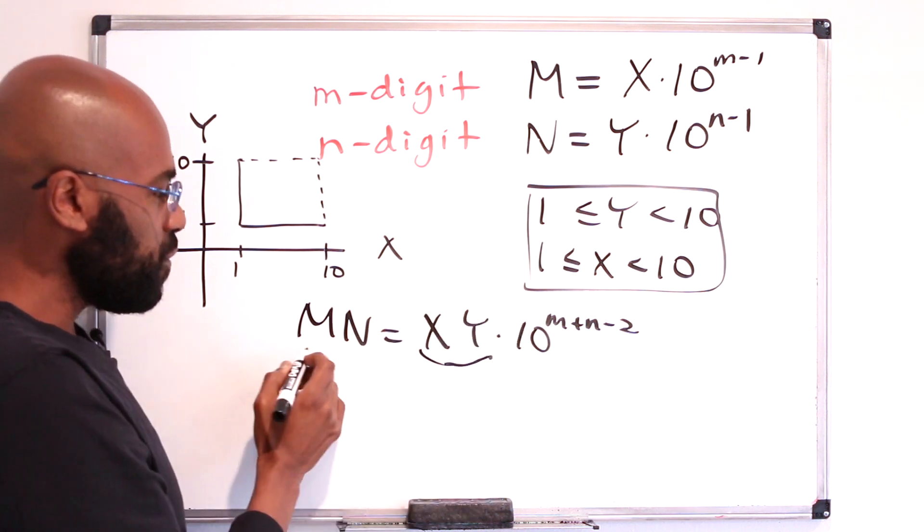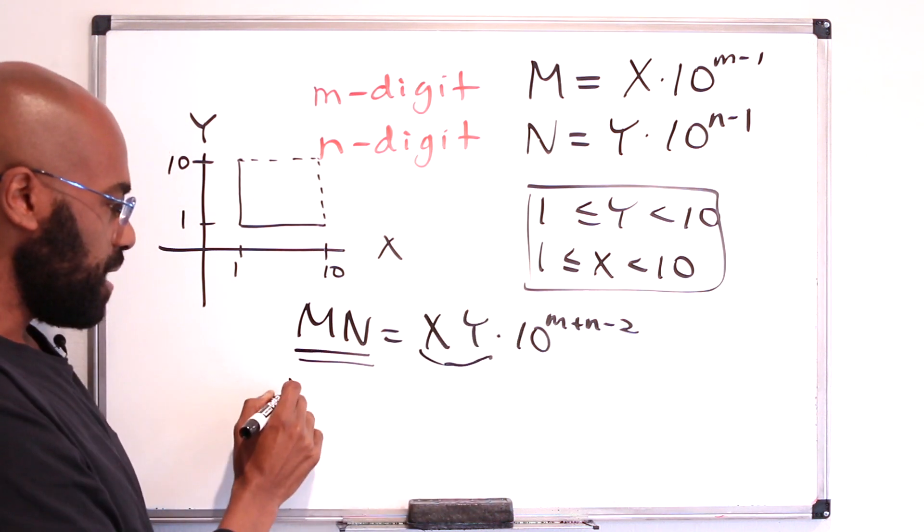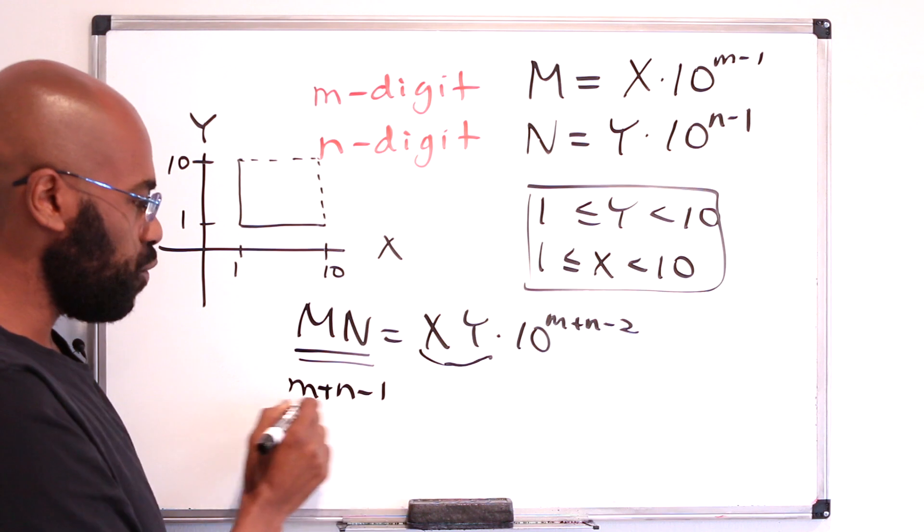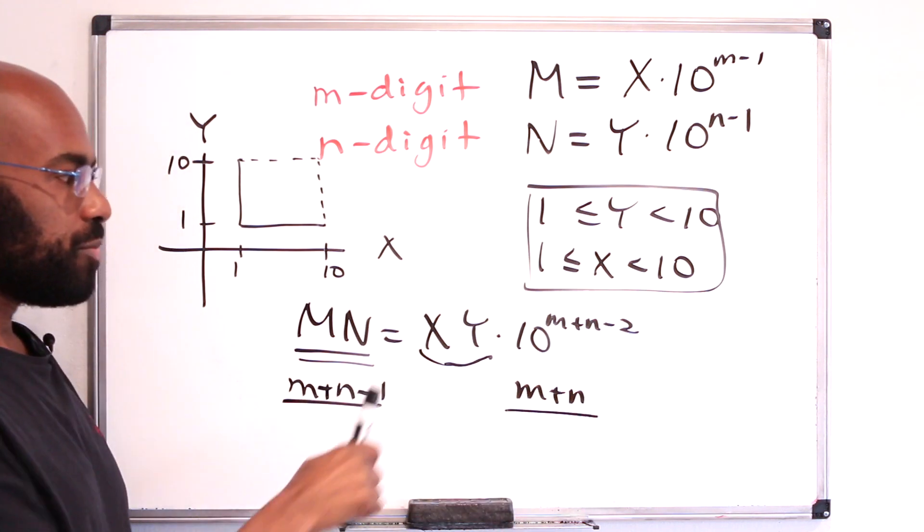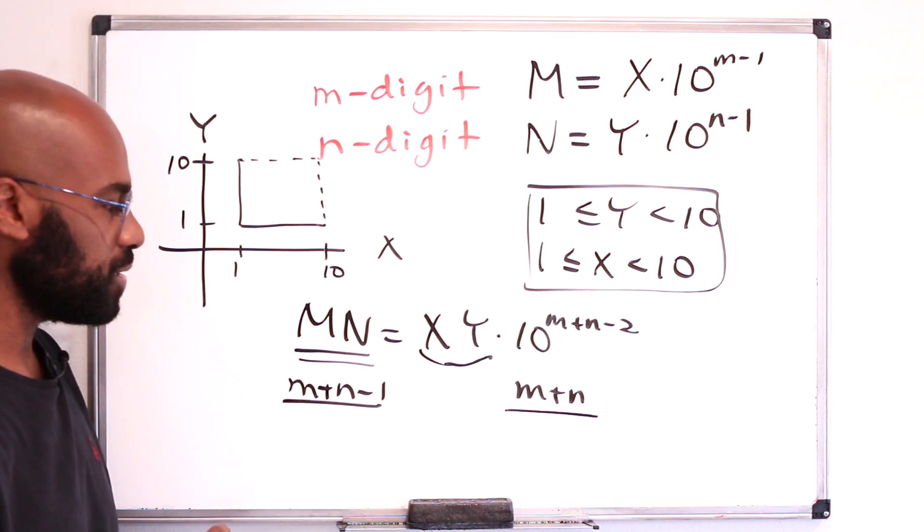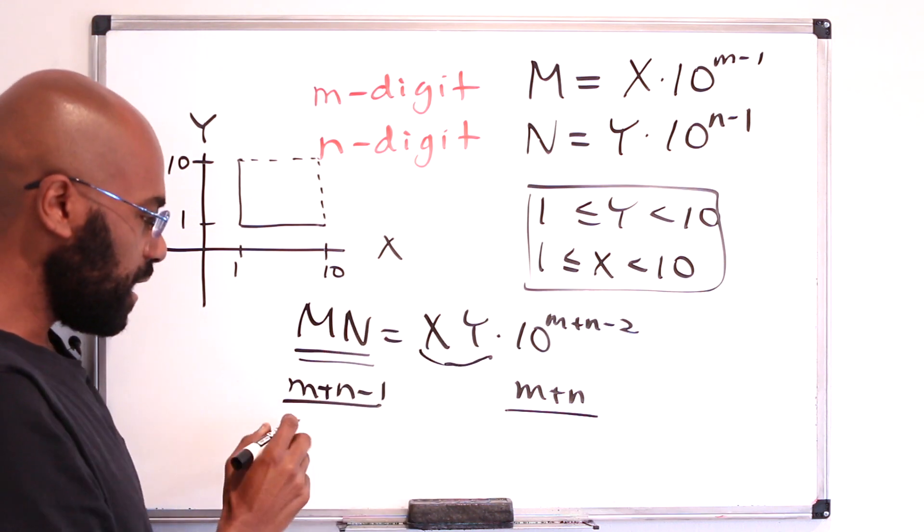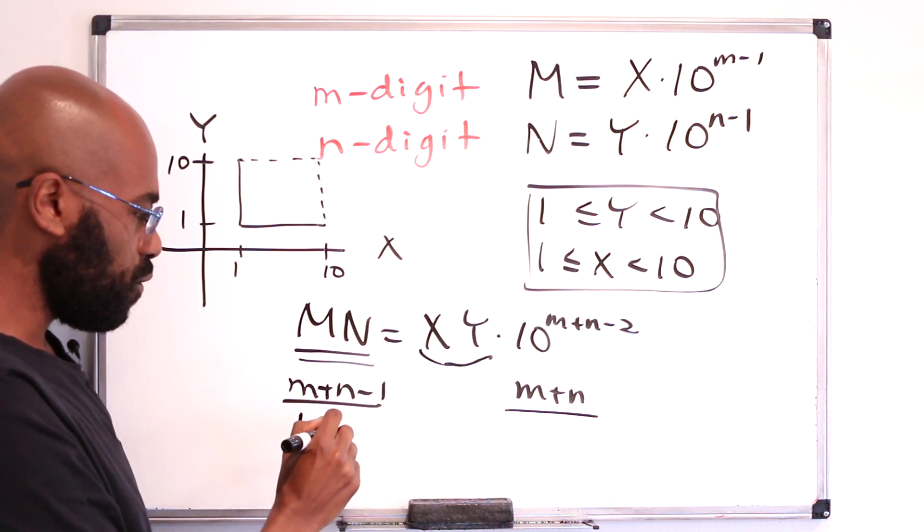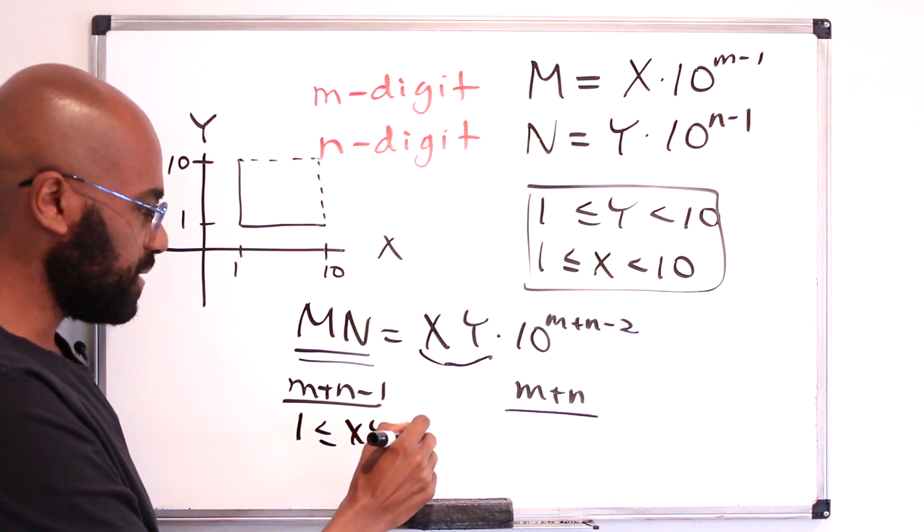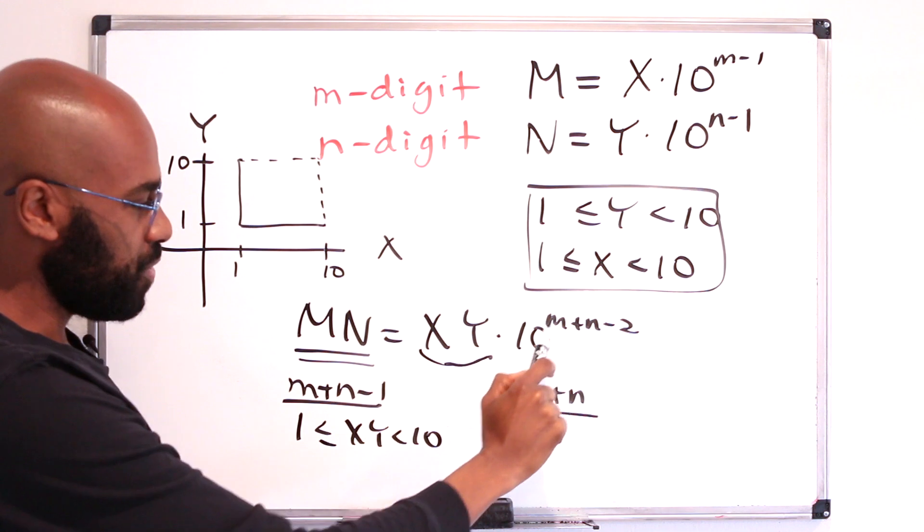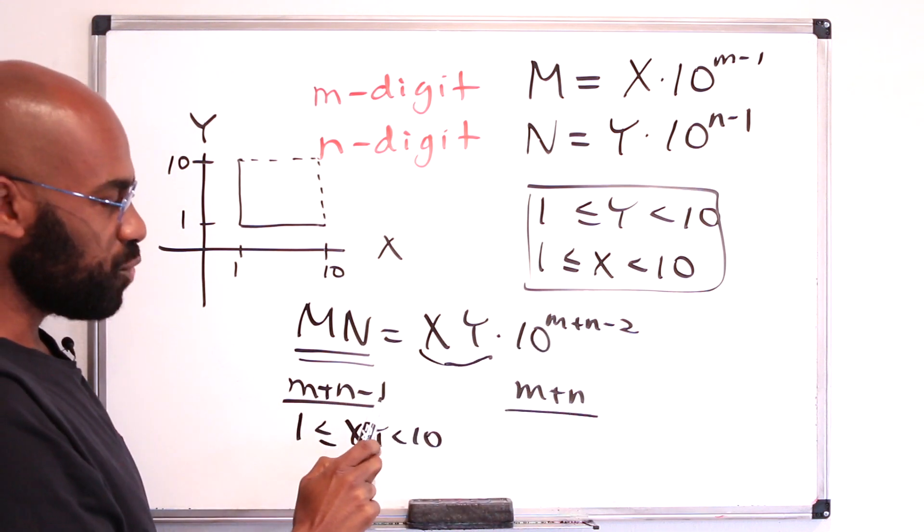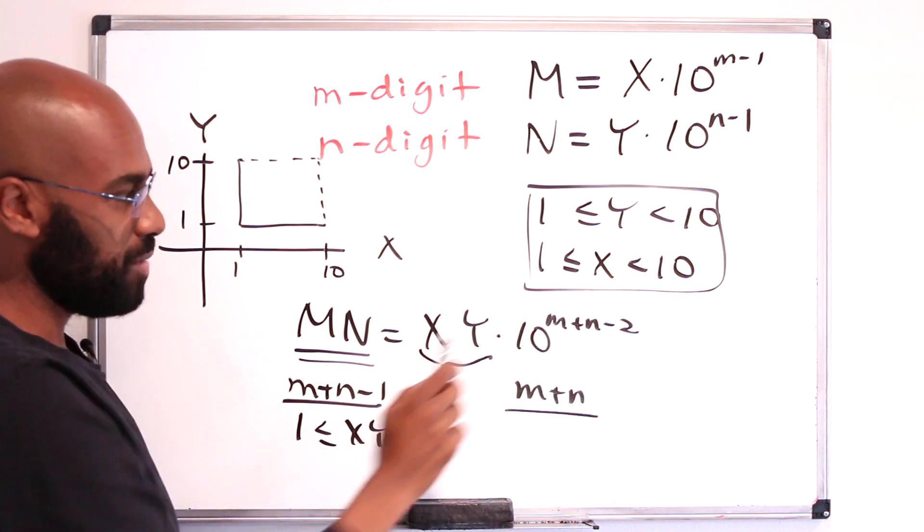If we want this number to be m plus n minus 1 digit, or m plus n digit, it'll depend on what the value of xy is. If xy itself is between 1 and strictly less than 10, then it's the case that this number is going to be m plus n minus 1 digit, because we have a 10 to the m plus n minus 2.